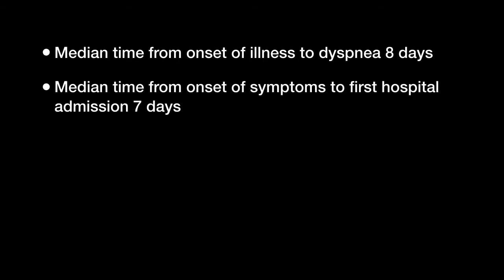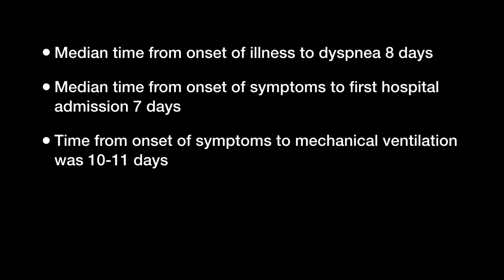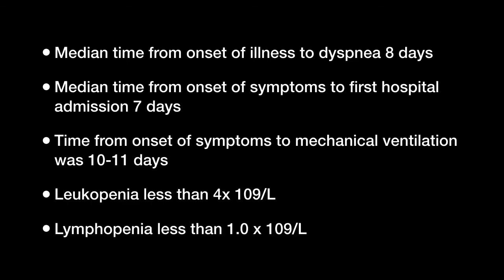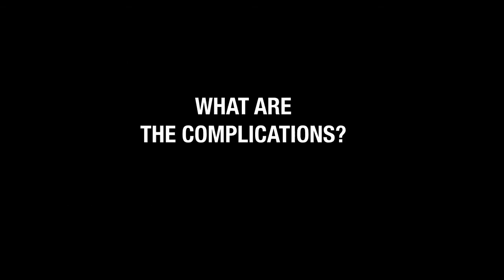Now let's talk about the course of illness. Median time from onset of illness to dyspnea is 8 days. Median time from onset of symptoms to first hospital admission is 7 days. Time from onset of symptoms to mechanical ventilation was 10 to 11 days. Lab findings include leukopenia and lymphopenia.